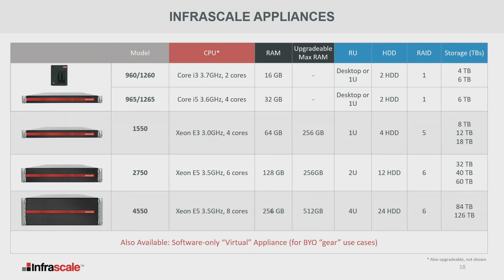We had a question about appliances. These are the default appliances we offer. To determine what a customer needs, we go through a sizing exercise: how much data they have, how frequently they're backing up, how long they want to retain it, and how much CPU and RAM they need to run critical workloads. Our goal is to make the appliance big enough to last at least three years on-prem. If they outgrow it, we'll swap them out. It's fully warranted under us, and we do support multiple appliances in a configuration.